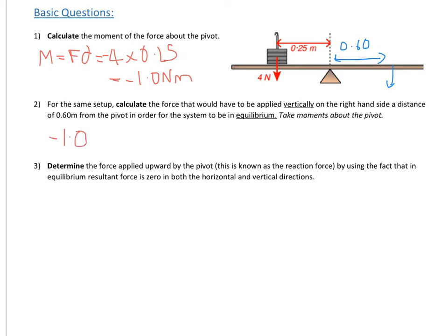So we've got minus 1.0 plus x times 0.6, because it's going in the opposite direction, is equal to 0, which means that x is 1 over 0.6, which is equal to 1.7 Newtons. Let's round that to two significant figures. So that's 1.7 Newtons going down.